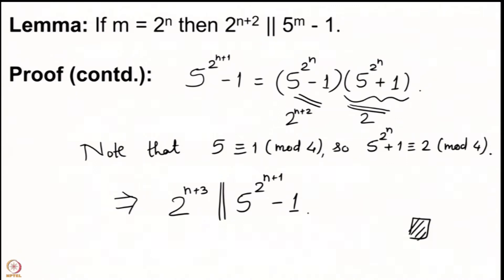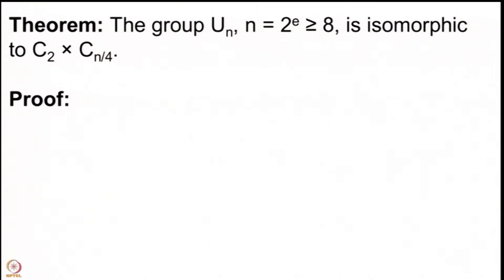The key takeaway is that there is an exact power of 2 dividing each power of 5 minus 1, which helps us compute the order of 5 modulo 2^n. This will be used to prove our next result: U(n) is isomorphic to C₂ × C(n/4).